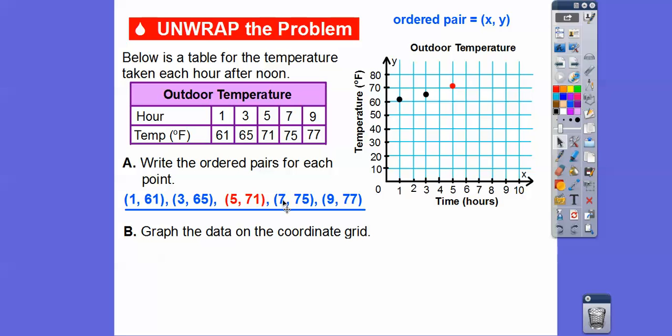This next one here is going to be over 7, up 75. Over 7, up 75 right there. And then finally, over 9, up 77. I can see that one's not quite on the same path as these ones right here. It still did go up, but it only went up 2 degrees right there.